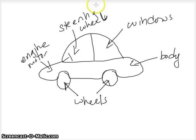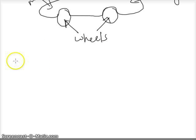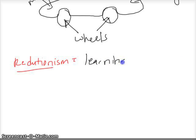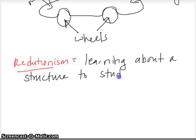It also needs a body to protect us from the outside. So think of it as the whole structure is the car, and in order to study how a car functions, we need to study its parts. Learning about a structure by studying its parts is called reductionism. So reductionism is learning about a structure to study its parts.